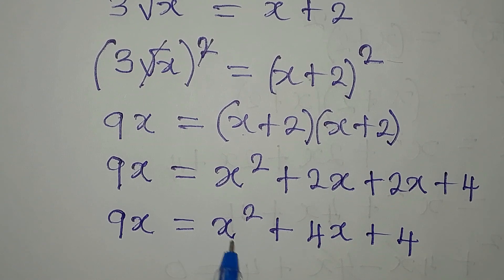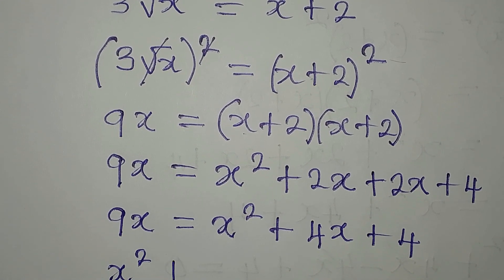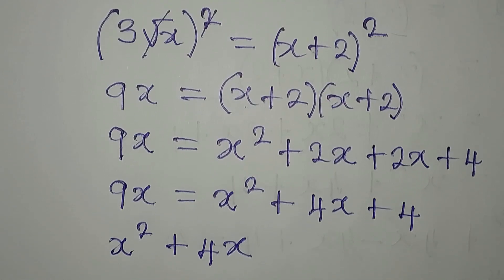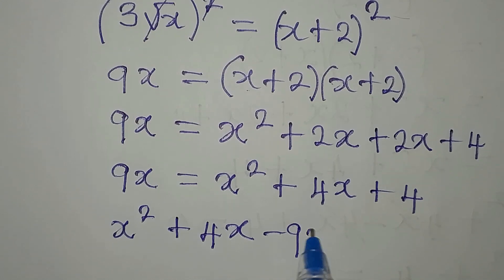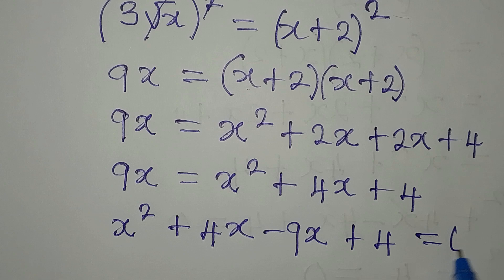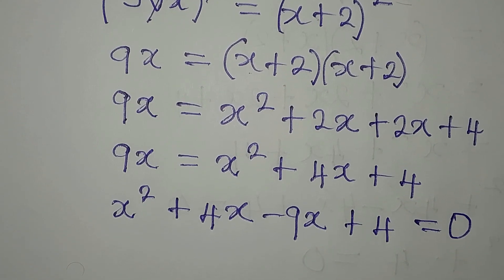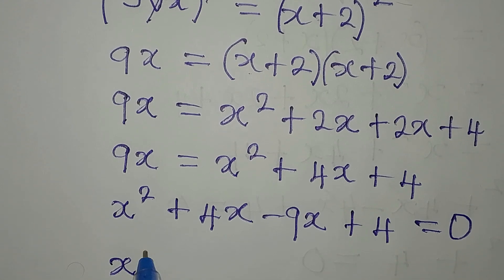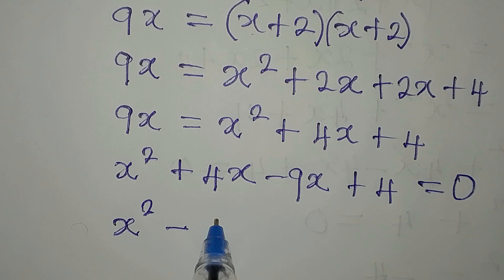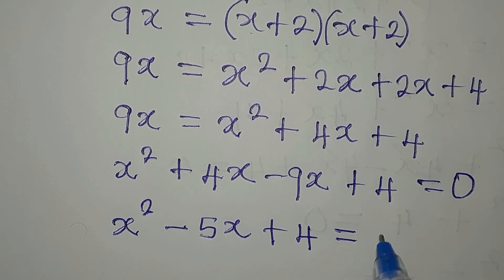The term with the highest power should come first, so we write x squared first, then 4x minus 9x gives minus 5x, then plus 4. Moving everything to one side, we get x squared minus 5x plus 4 equals 0.